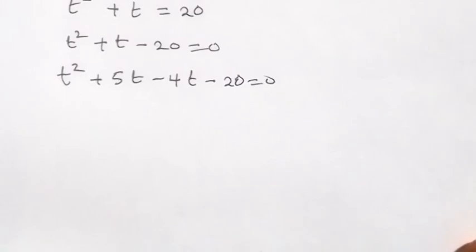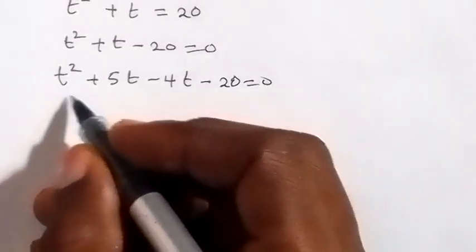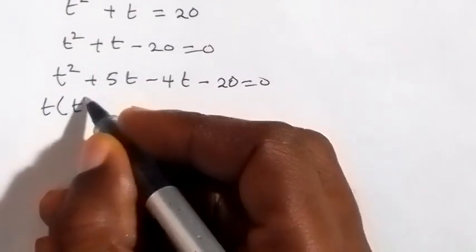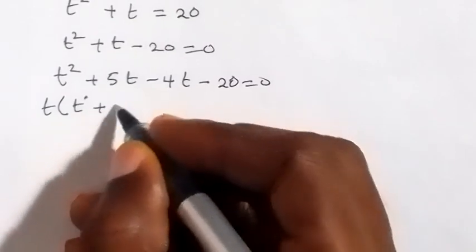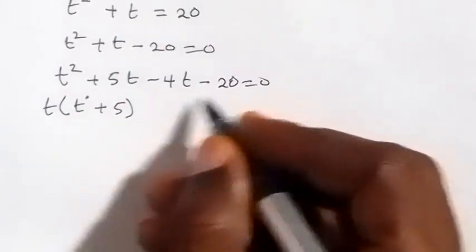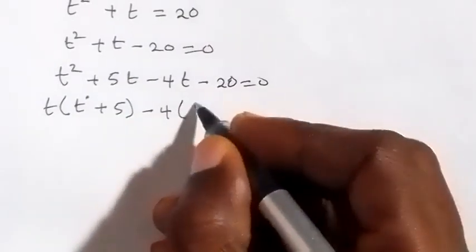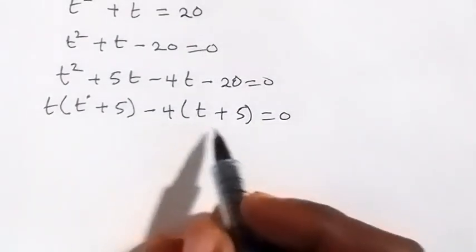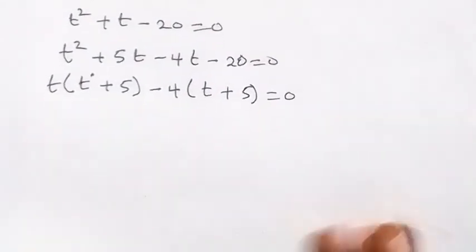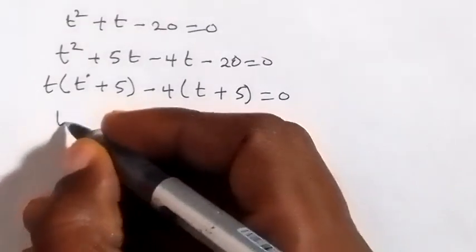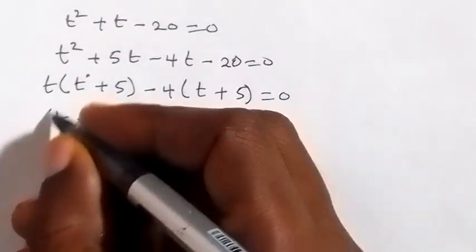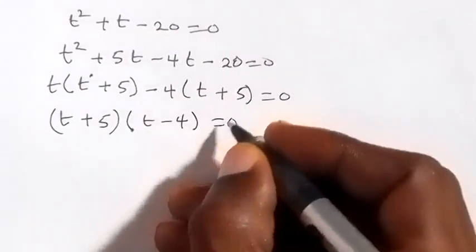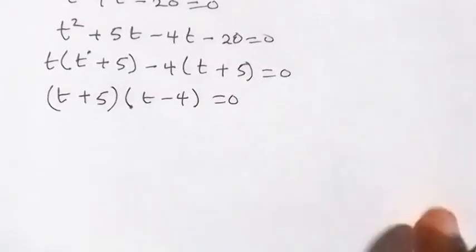Now from here we group and factor. From the first two terms, what is common is t — we factor it out to get t into bracket (t plus 5). Then from the last two terms, what is common is minus 4, giving minus 4 times (t plus 5). So we have (t plus 5) common, and taking it out gives us (t plus 5)(t minus 4) equals zero.